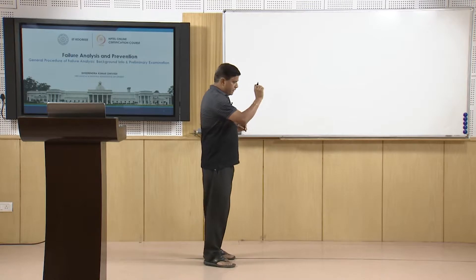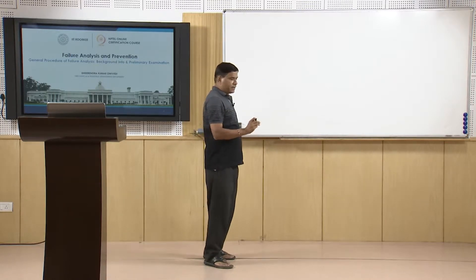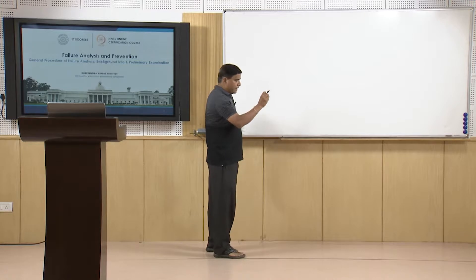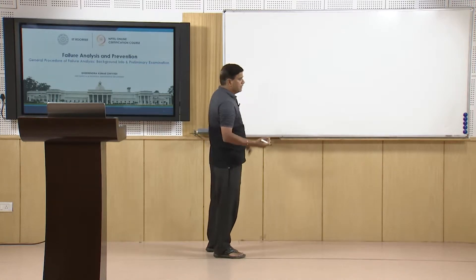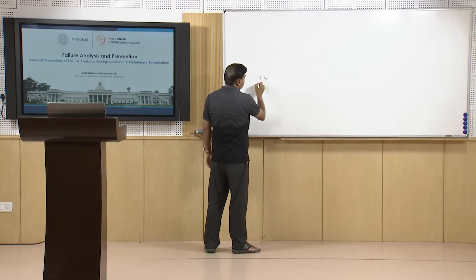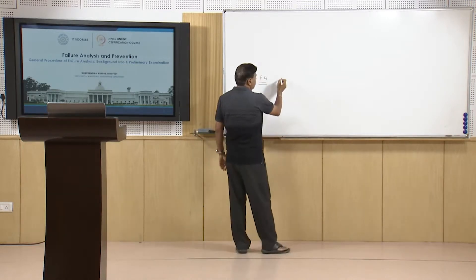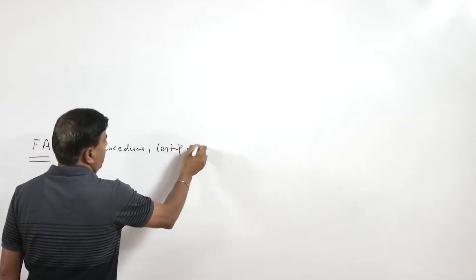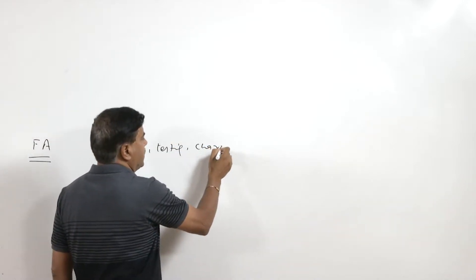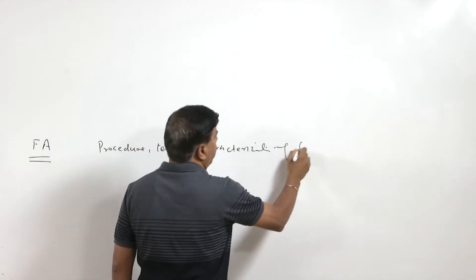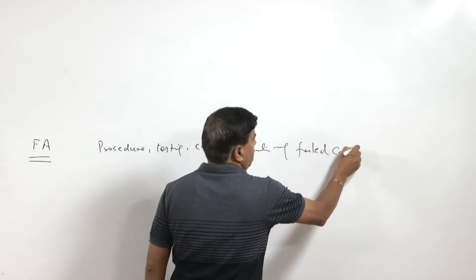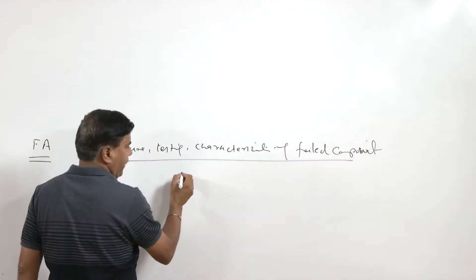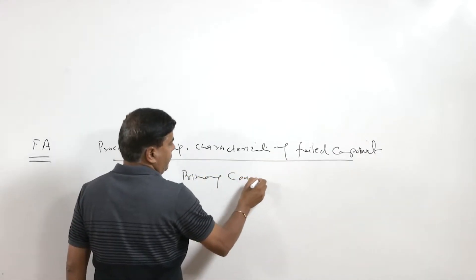We have listed about 13 steps related to the general steps of failure analysis. One by one, we will be talking about the relevance of each step in detail and what should be done under each step. Failure analysis is basically about the procedure, tests, and characterization of the failed component, so that we can identify the primary causes of failure.